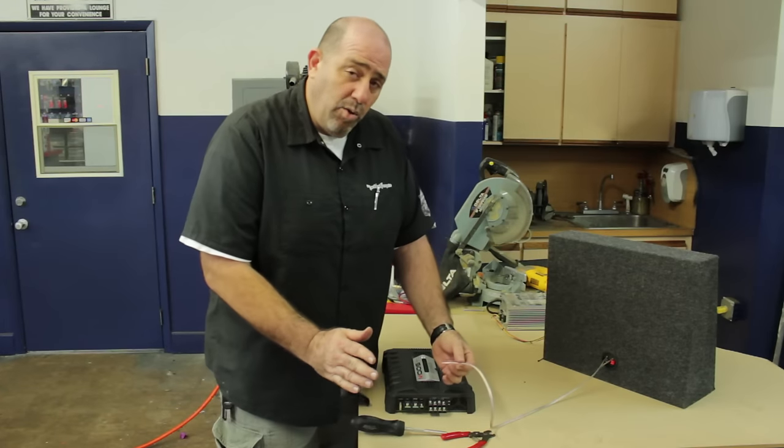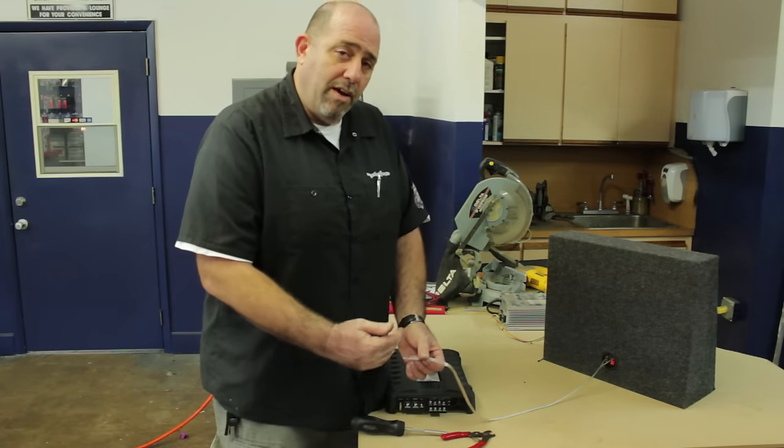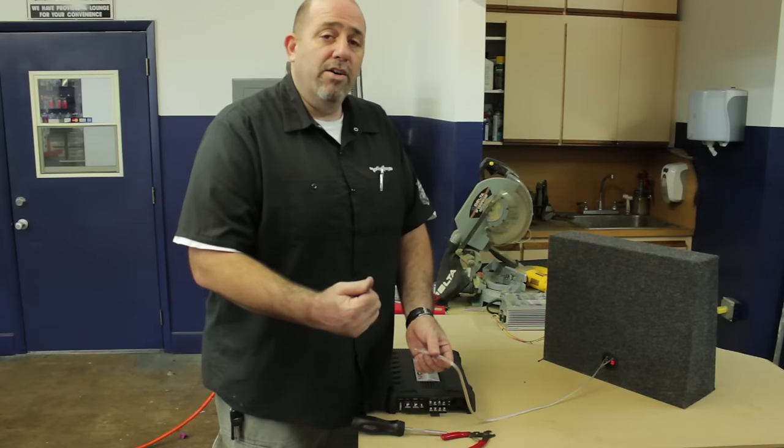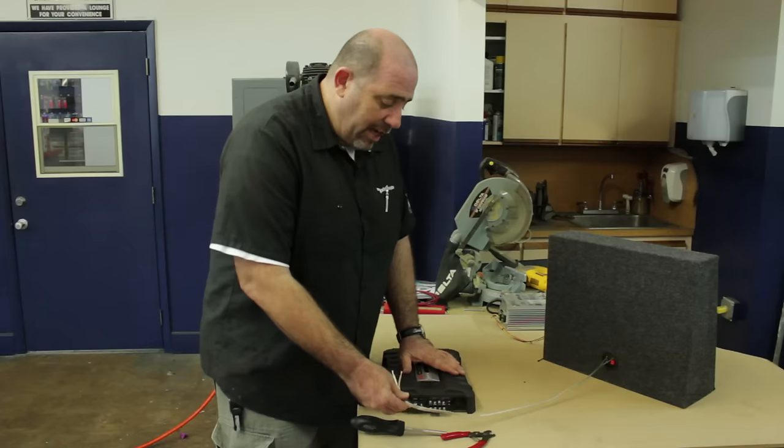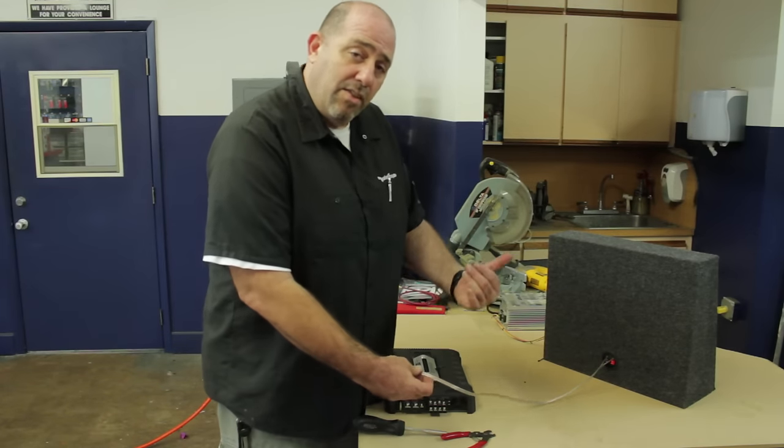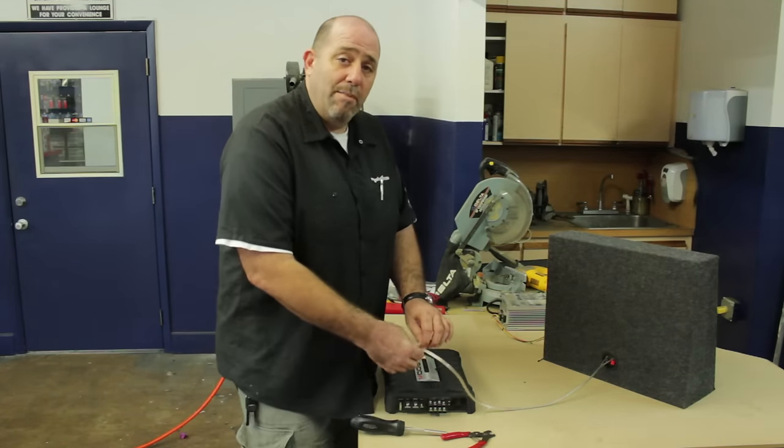Then, on most amplifiers, you should always consult the owner's manual, but on most amplifiers, to bridge a two-channel amplifier, you're going to use the left positive and right negative. On this Kenwood amplifier, that's how it is. That's what we're going to do, but please consult your owner's manual to make sure you don't do any damage to your amplifier.